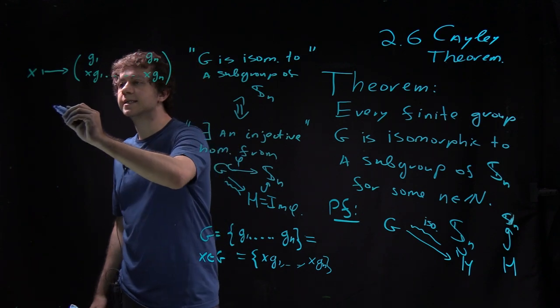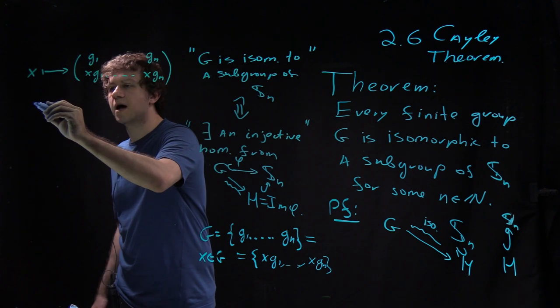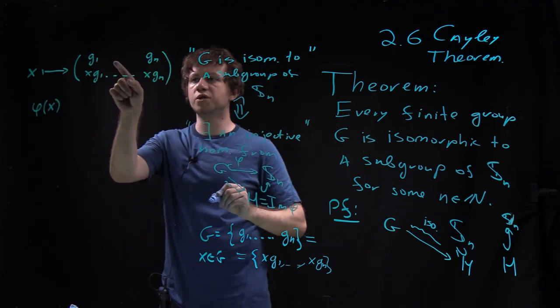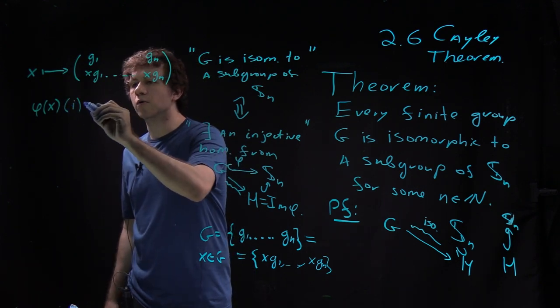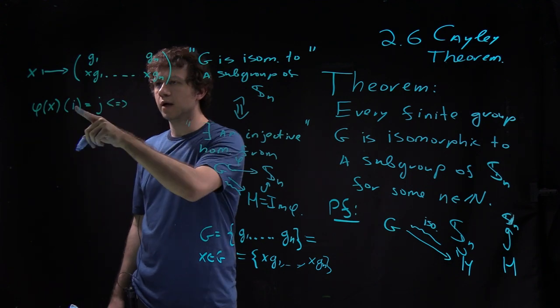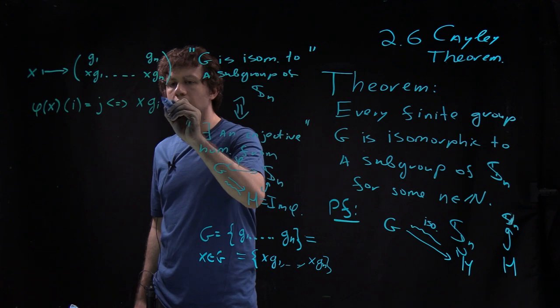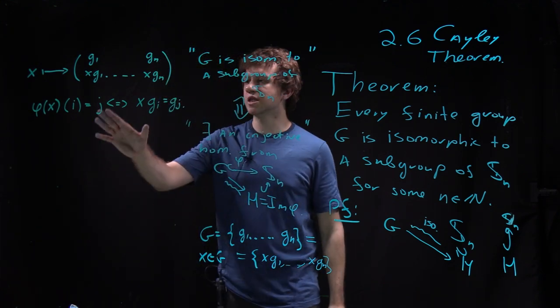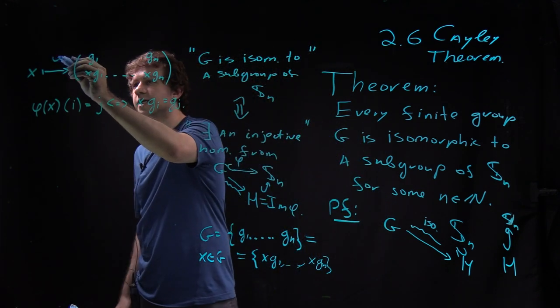And I can write it down formally if I want to. So I'm constructing a map phi. I can say that phi of X is a permutation, and if I want to see what it does with element i, it equals j if and only if X times g_i equals g_j. So this is my formal definition of phi. This is what phi does. And then I can check. I need to check two things.